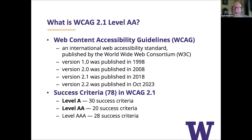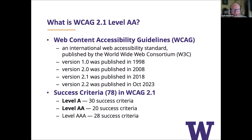Version 2.2 is the latest version, but the new ADA rules went back a version and settled on 2.1. They felt 2.1 has been around long enough that organizations and developers have figured out how to comply with it. Version 2.2 adds some additional requirements that haven't proven themselves yet. WCAG 2.1 has 78 specific success criteria — measurable checkpoints on what it means to be accessible.